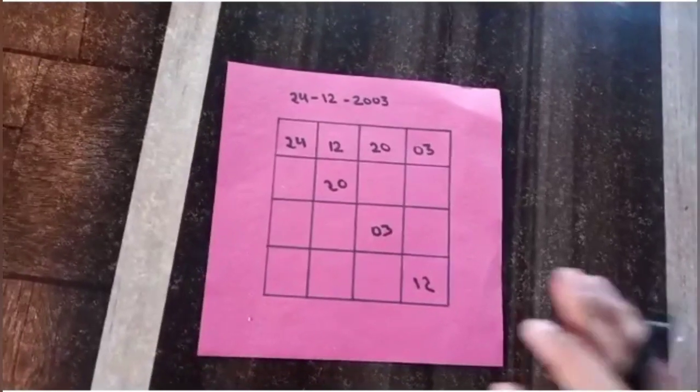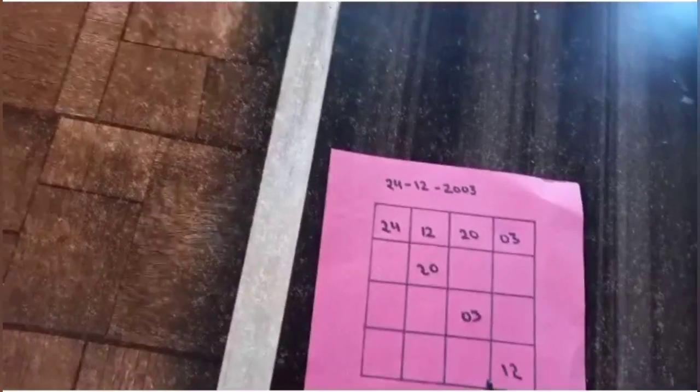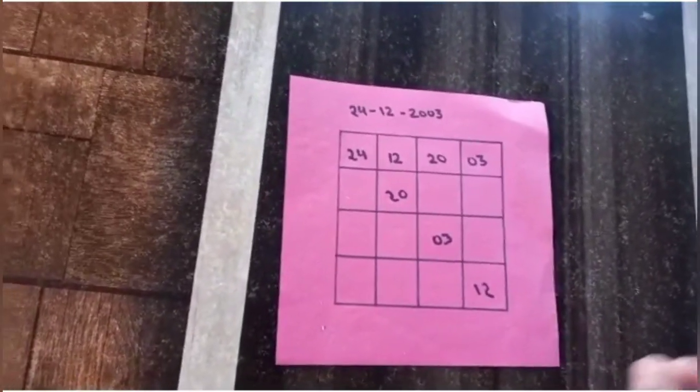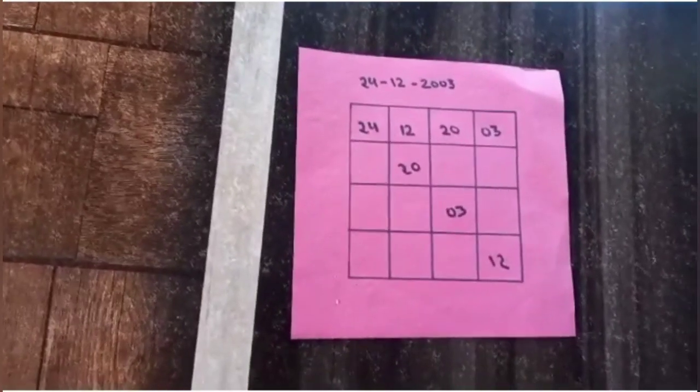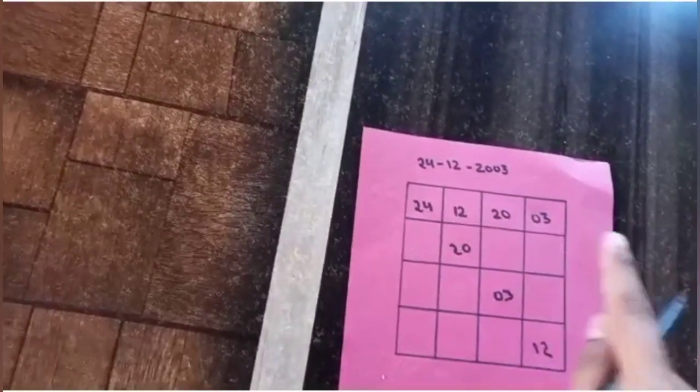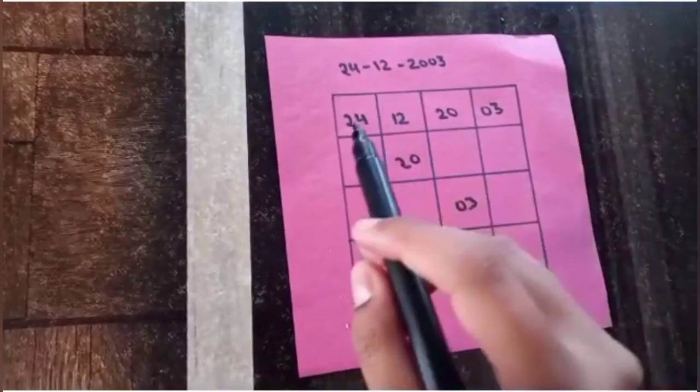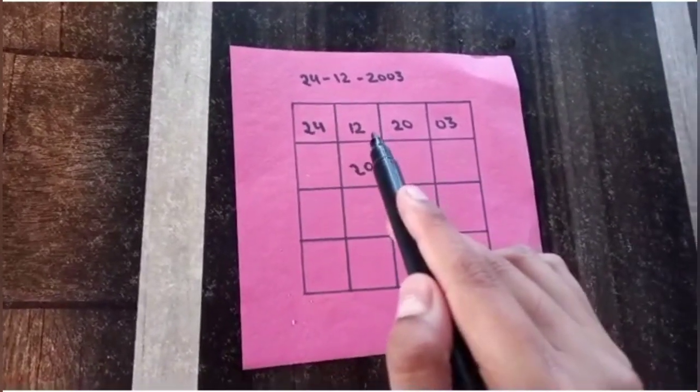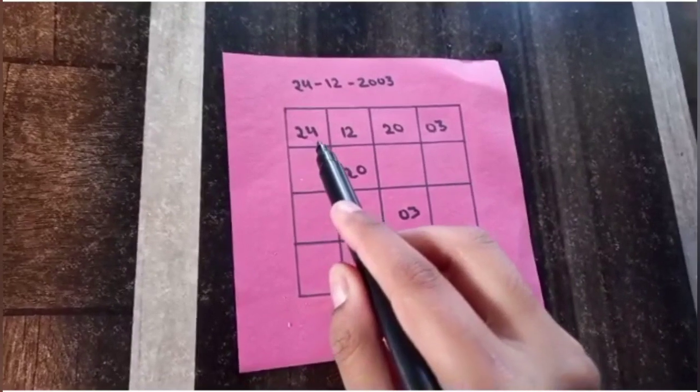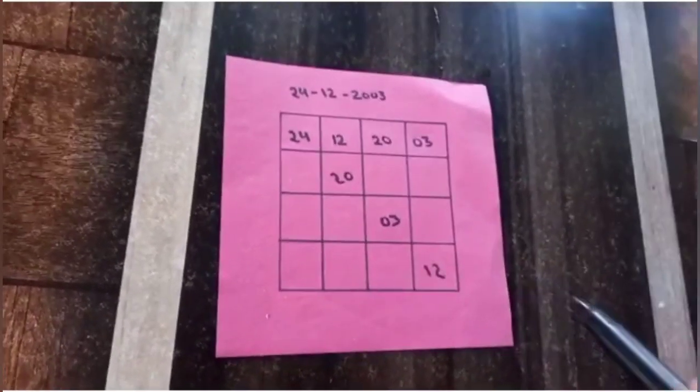So, again, I have taken a square with four rows and four columns. Now, though I have partially filled this, but again, I'll tell you how to make it a perfect magic square. So, again, I have taken my birth date, that is 24th December 2003. Again, as I told, I have filled these boxes with the same numbers. Again, I have filled this diagonal in such a way that it will sum up to 59.